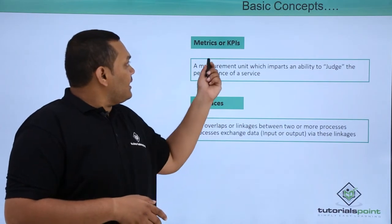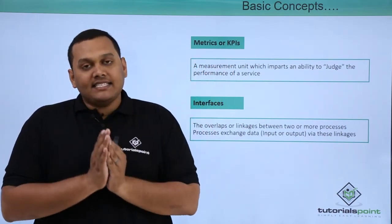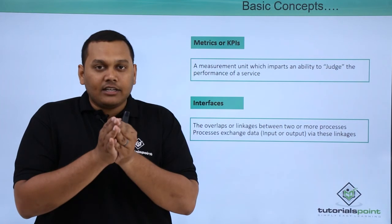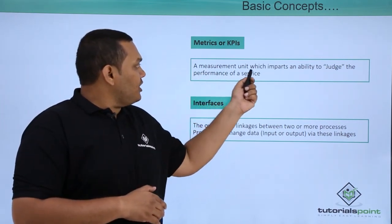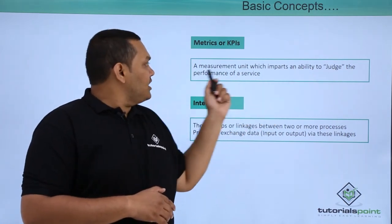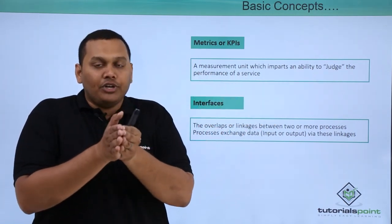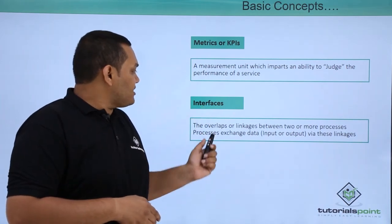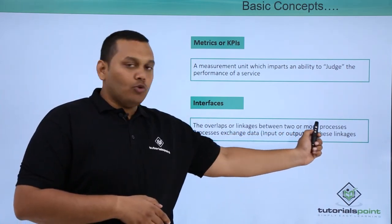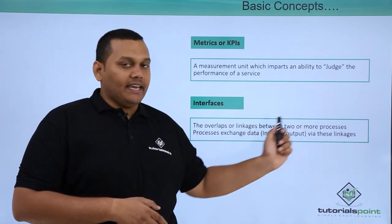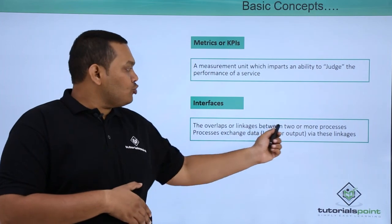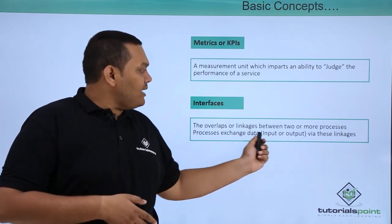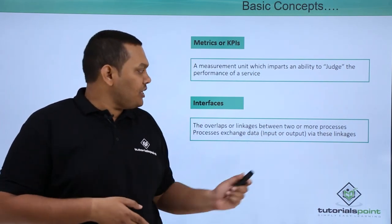Coming to the next concept: metrics or KPIs. Metrics is a measurable unit which judges whether the process is correct to get the result of your internet service — a measurement unit that imparts an ability to judge the performance of a service. Coming to interfaces: these are the overlaps or linkages between two or more processes where processes exchange data via these linkages. The interface means two processes which are linked to each other to give the desired results, where input and output can be exchanged via these linkages.